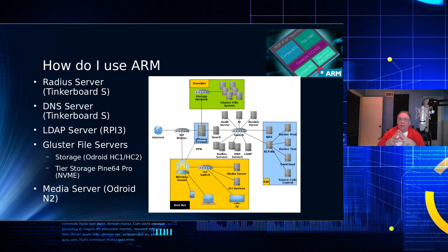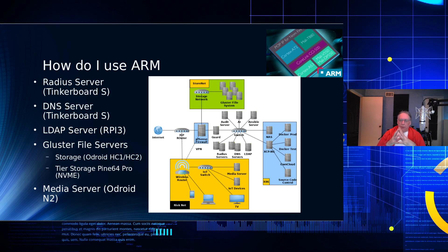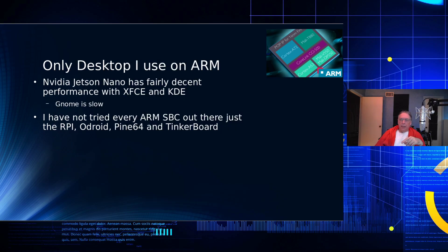I have NVMe drives attached to the Pine 64 Pros — they're used as tiered storage. If it detects files that are more frequently used, it'll copy them off the slower SSDs and onto the NVMe for retrieval, and that really does speed things up. The media server is an Odroid N2, with no GUI on that one.